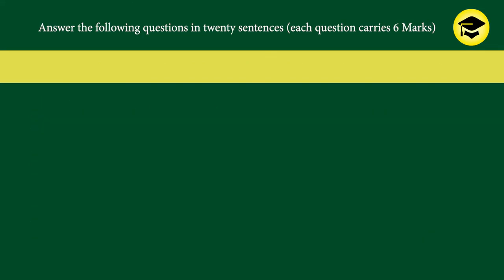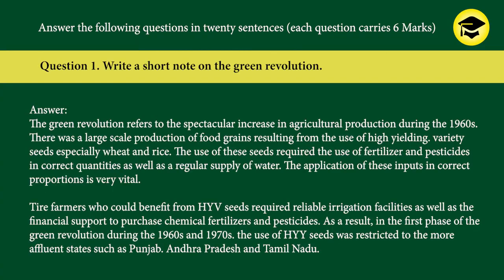Answer the following questions in twenty sentences — each question carries six marks. Question 1: Write a short note on the green revolution. Answer: The green revolution refers to the spectacular increase in agricultural production during the 1960s. There was large-scale production of food grains resulting from the use of high-yielding variety seeds, especially wheat and rice. The use of these seeds required fertilizer and pesticide in correct quantities as well as a regular supply of water. Farmers who could benefit from HYV seeds required reliable irrigation facilities and financial support to purchase chemical fertilizer and pesticide.